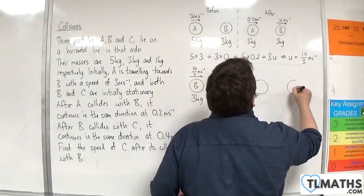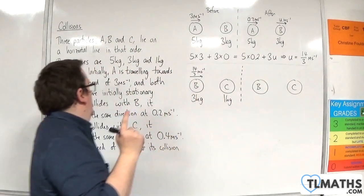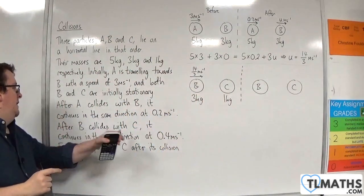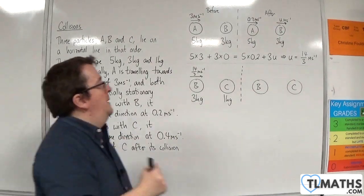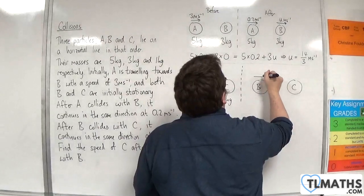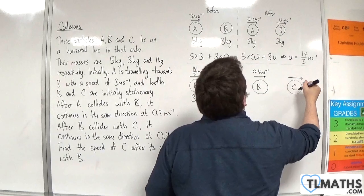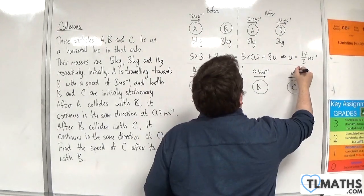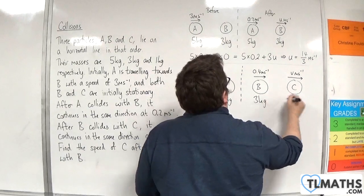We've got particle B and particle C. After B collides with C, it continues in the same direction at 0.4 meters per second. So this is now down to 0.4 meters per second. And particle C is going to be traveling to the right. Let's call that V meters per second.